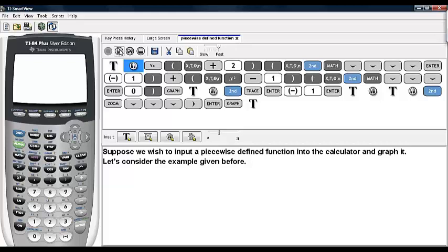Suppose we wish to input this piecewise defined function into the calculator. We are going to select y equals, type in a parenthesis and then the first branch x plus 2, put that in a closing parenthesis, and then type in the condition upon which this branch is used. That would be x is less than negative 1. Then we close that and hit plus.